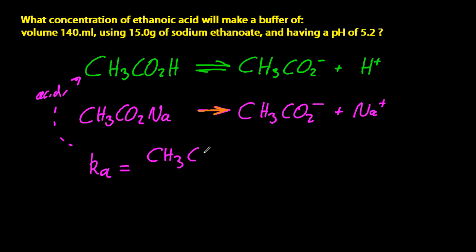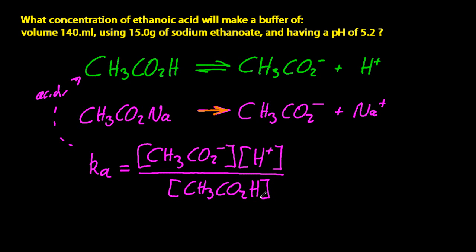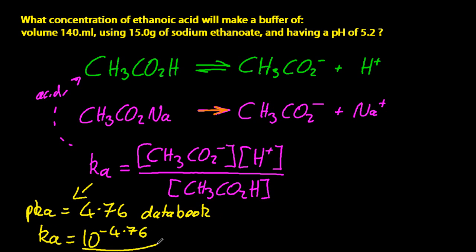So Ka, well, that's products divided by reactants for the one that's in equilibrium. And I'm going to assume that the concentration of H+ at the bottom is negligible. That means it's small compared to the concentration of ethanoic acid. So from the data booklet, pKa is 4.76 for ethanoic acid. So Ka is 10 to the minus 4.76.